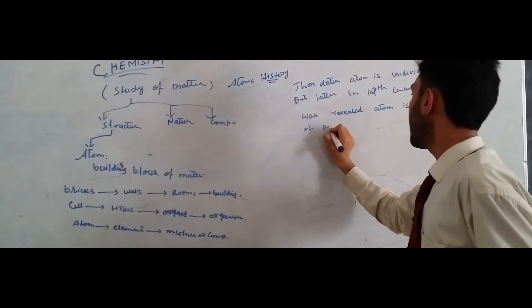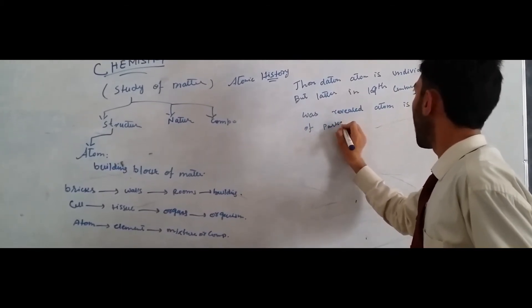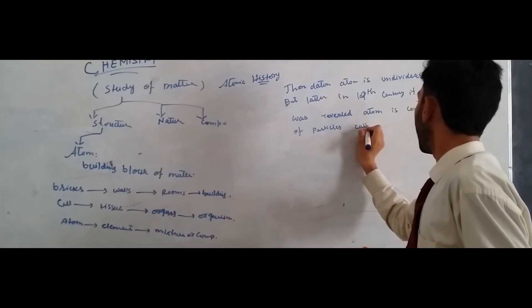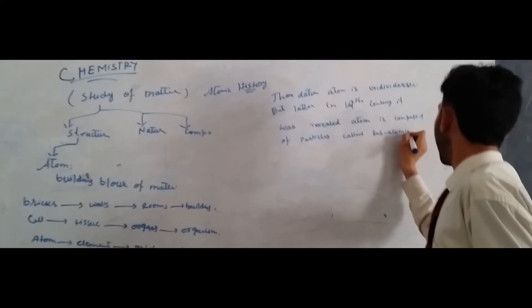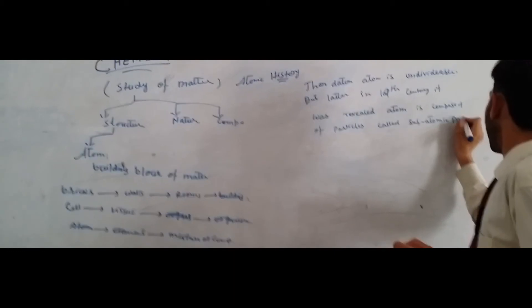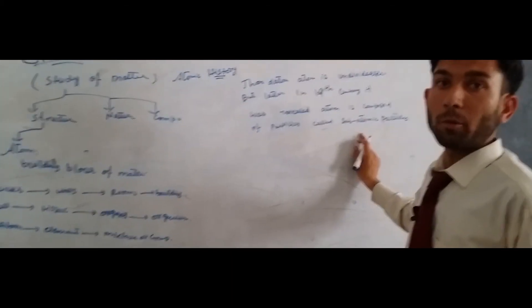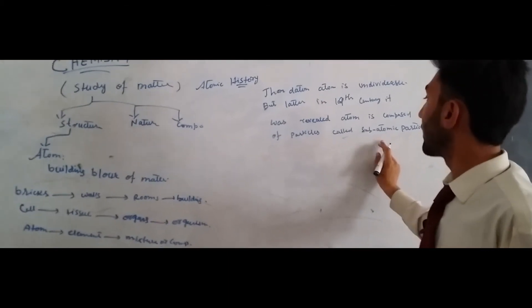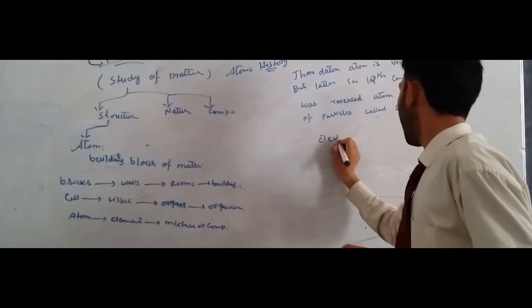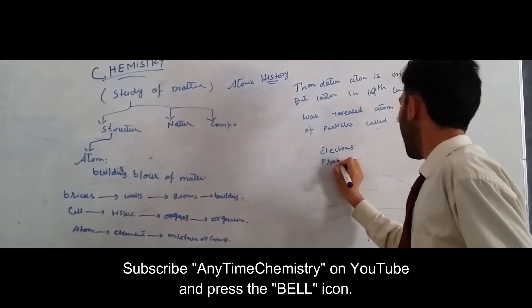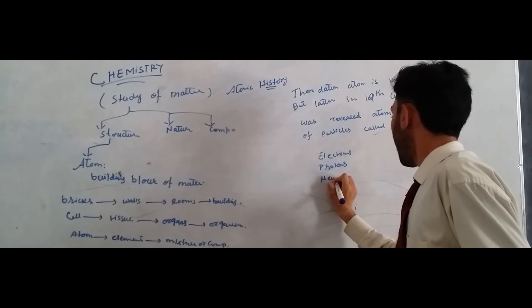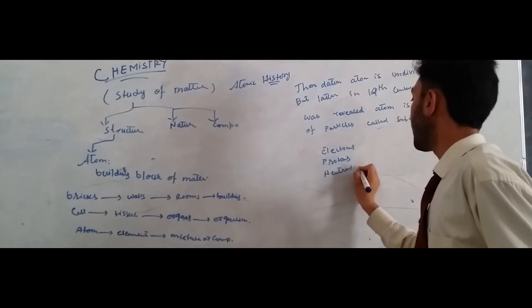Subatomic particles. Subatomic particles are more than 100, but electron, protons, and neutrons are very famous.